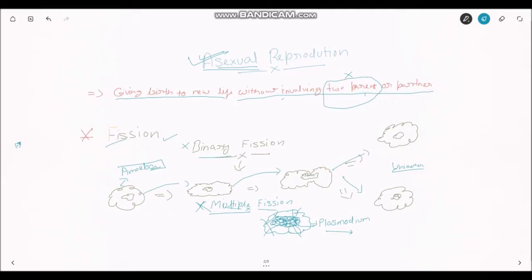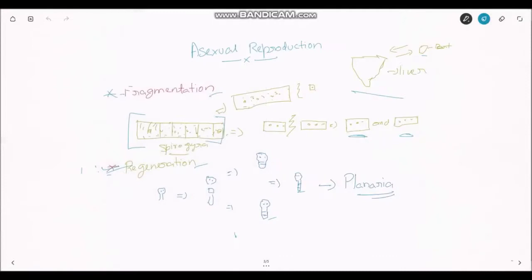We will move on to next types of asexual reproduction. The next is fragmentation. This type of reproduction can be seen in an organism known as spirogyra. The body of spirogyra is a filament-shaped body, and it gets divided into two or more parts accidentally or maybe after getting mature. After dividing, they develop into a new organism.